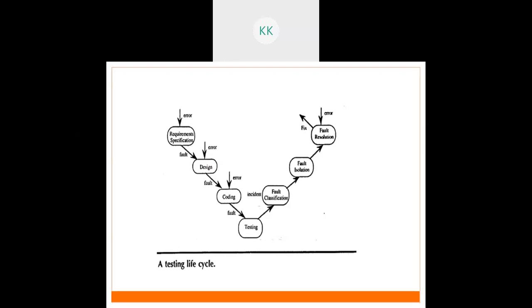In the testing life cycle, after we start testing we do fault classification — classifying the fault into categories such as software fault, functional fault, structural fault, or database fault. Then we isolate the fault to identify which module needs to be changed, rather than making changes everywhere. We then resolve the fault. If it is resolved, it is marked as fixed; otherwise, we reassign the fault.